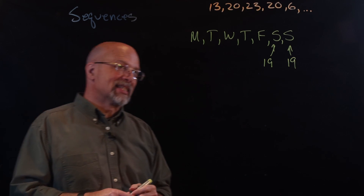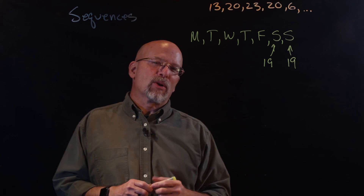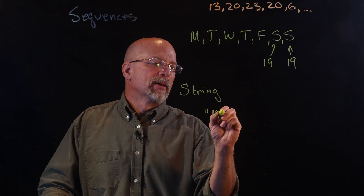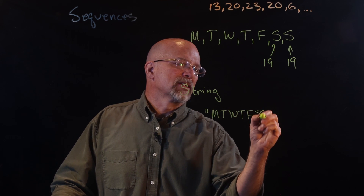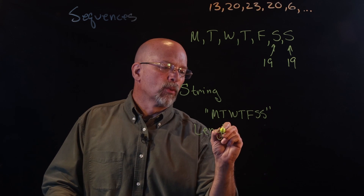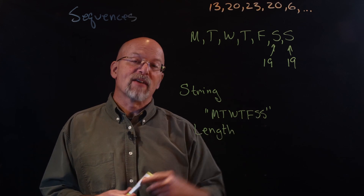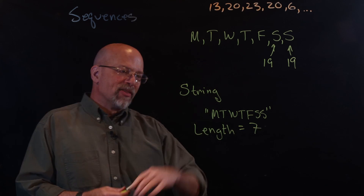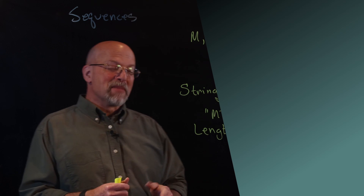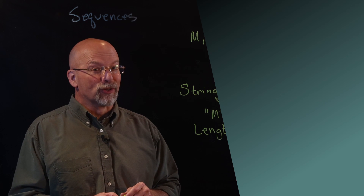So what we had here was a finite sequence. It turns out this type of finite sequence is represented in computing as a string. We've got M, T, W, T, F, S, S — the days of the week. The length is one, two, three, four, five, six, seven — the length equals seven. And this is a string: another type of sequence you will see in computing. All I know is it stumped my dad and me, and it made my sister incredibly happy.